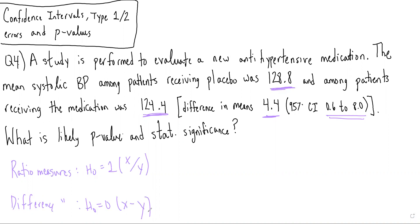In this case, because we're doing a difference measure, we look to see whether the 95% confidence interval includes 0. We see that it extends from 0.6 to 8.0, which does not include 0, and therefore we would be able to claim that this is a statistically significant result.